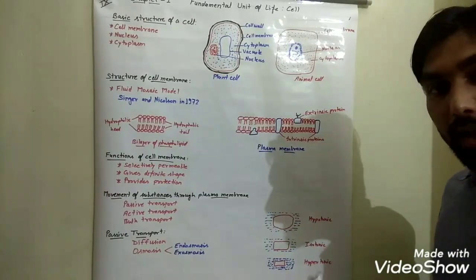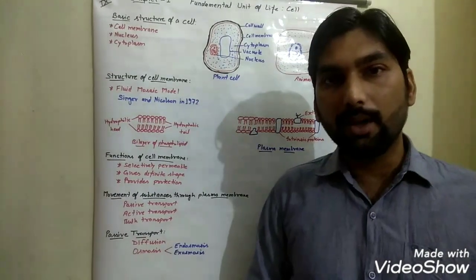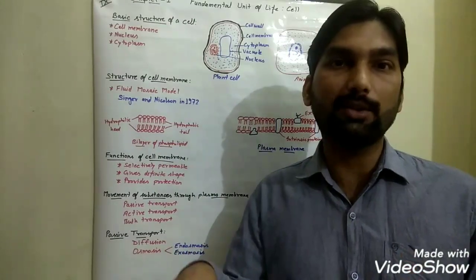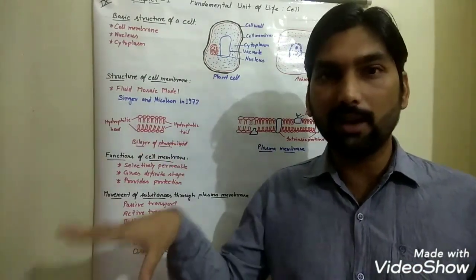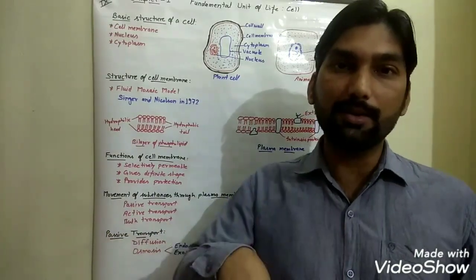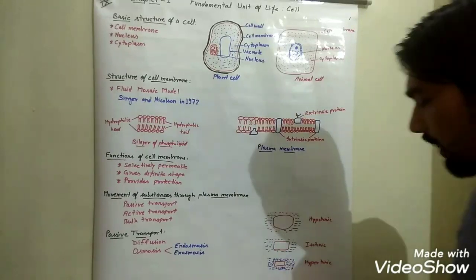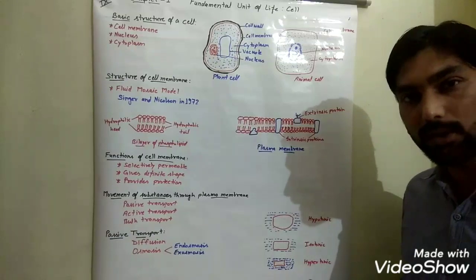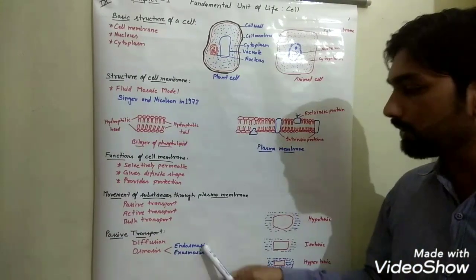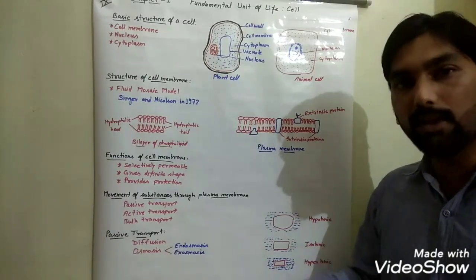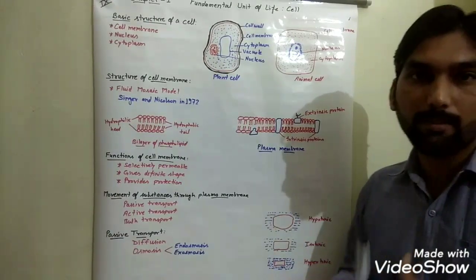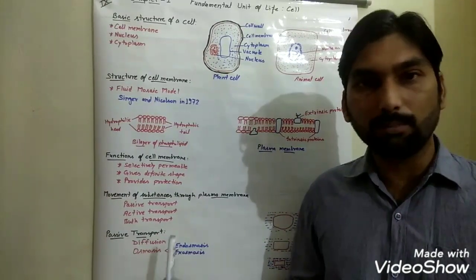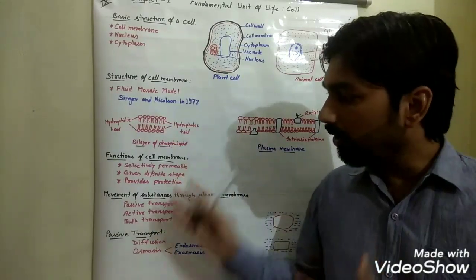The last type is hypertonic. Hyper means excess — it means the solution in which the cell is placed has a higher concentration of solute. The water concentration is less outside the cell but more inside the cell. So whenever any cell is placed in a hypertonic solution, the cell loses water through exosmosis and during this condition the cell shrinks. So this was passive transport by diffusion or osmosis.